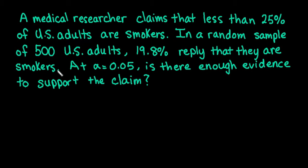For this video, I want to show you how to run a one-proportion Z-test using a rejection region decision rule. We have a medical researcher who claims that less than 25% of U.S. adults are smokers. In a random sample of 500 U.S. adults, 19.8% reply that they are smokers. At alpha equals 0.05, is there enough evidence to support the claim?